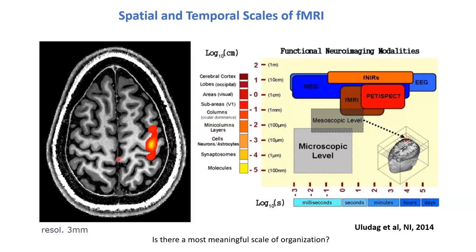Putting this in perspective with a summary slide by Kamil Uludag: we're looking at human imaging in a niche from seeing blobs to seeing layers where you can start to see detail. Some even think the level of the column — a mesocircuit — is where information is actually handled, and it would be remarkable if we could hit that resolution.